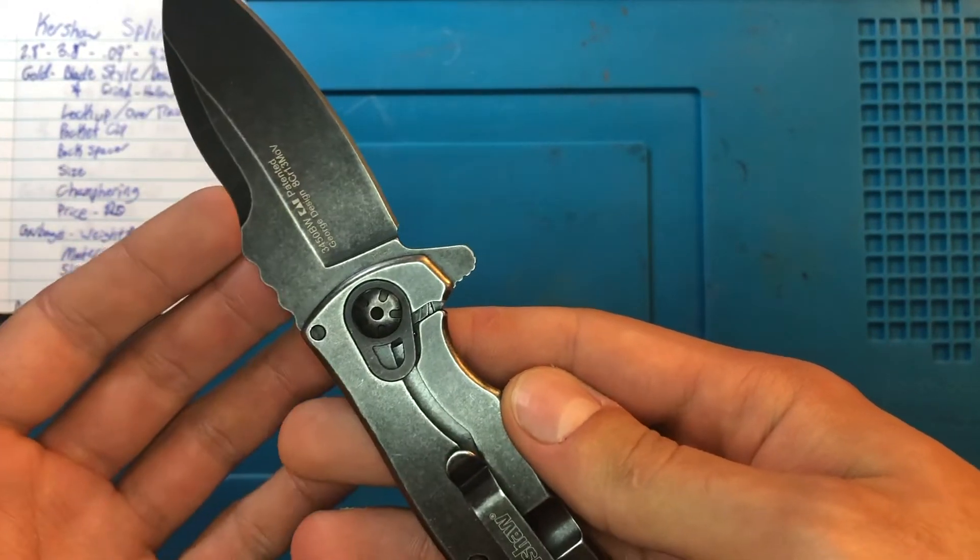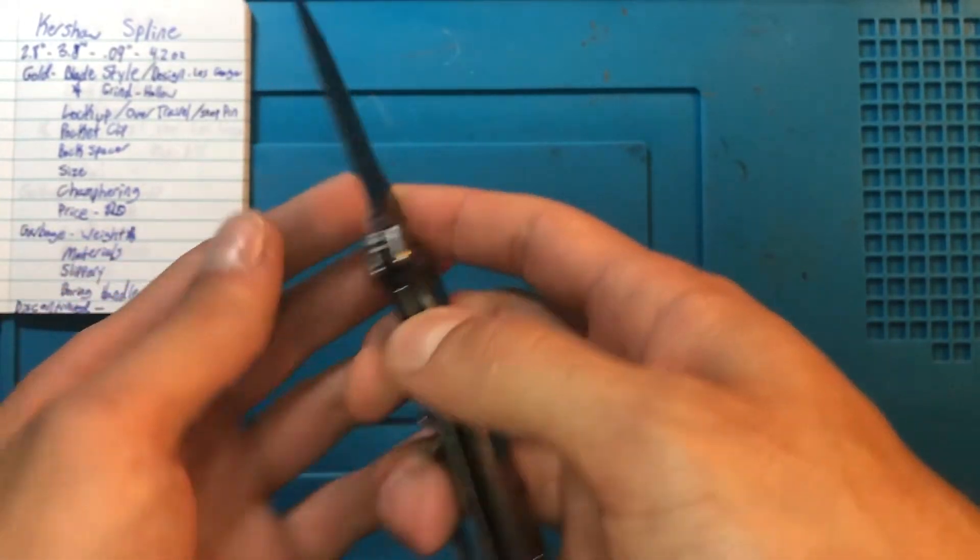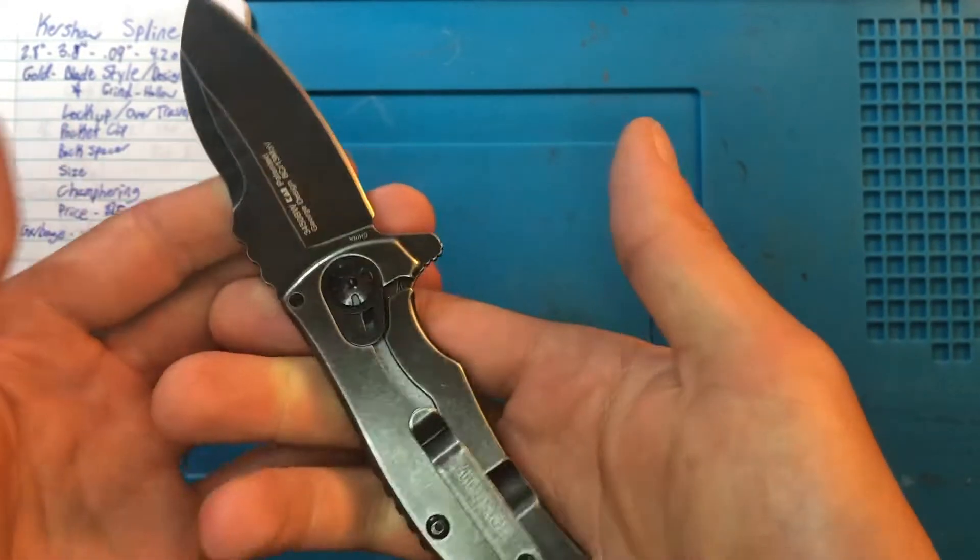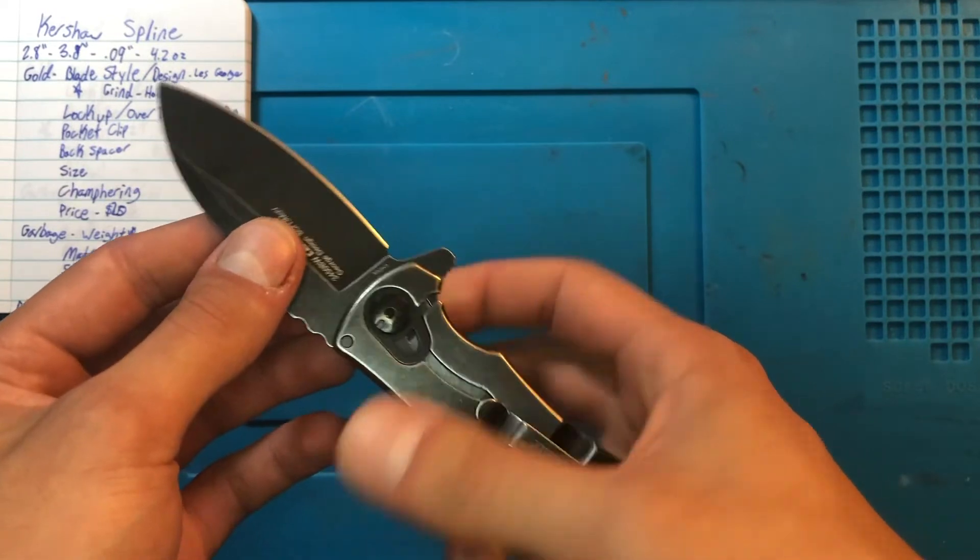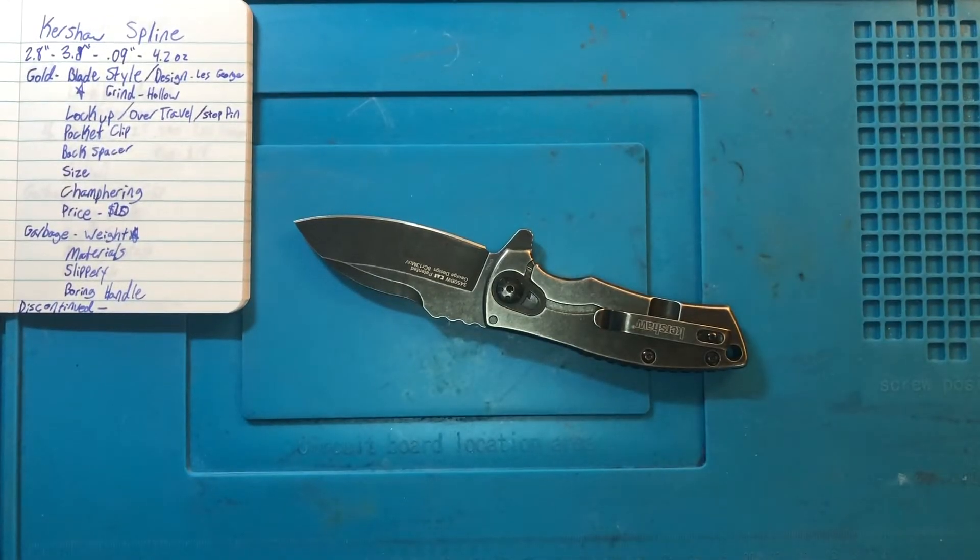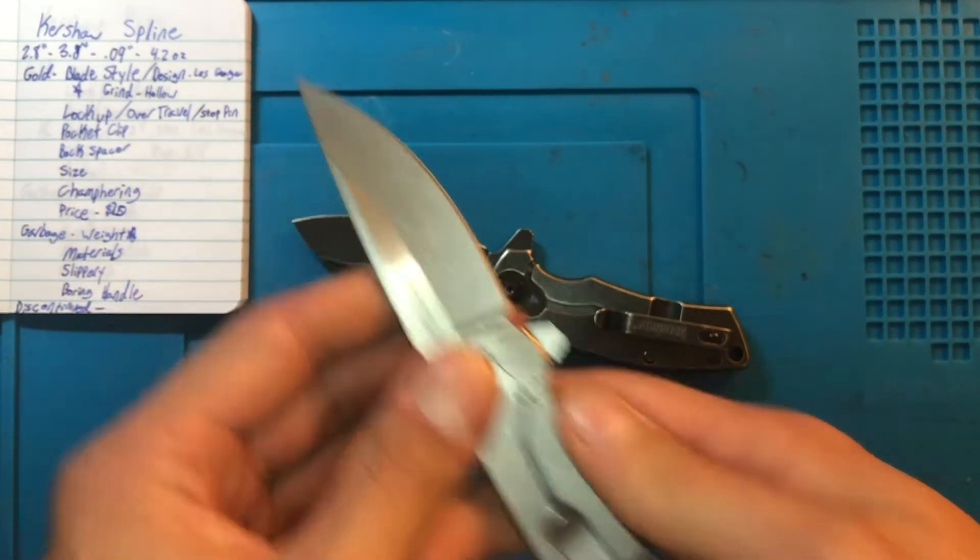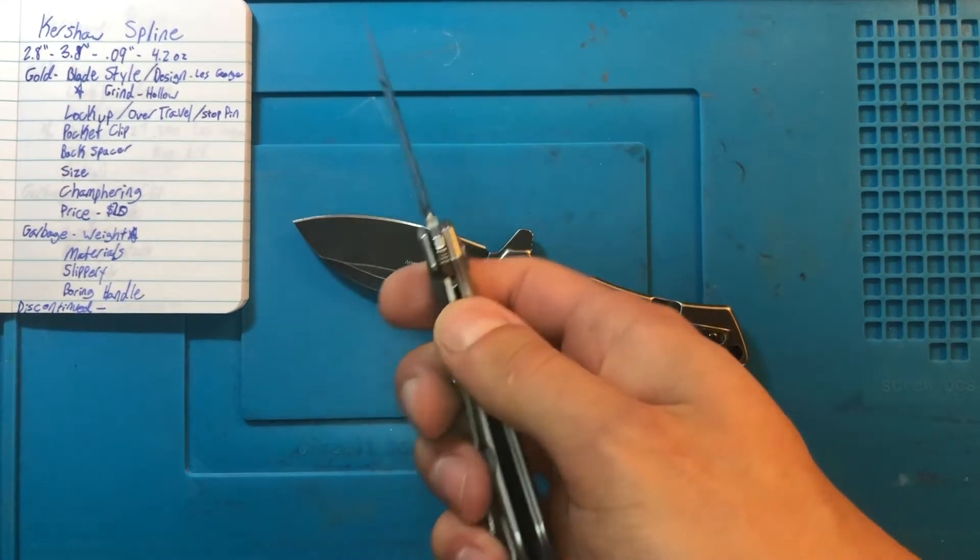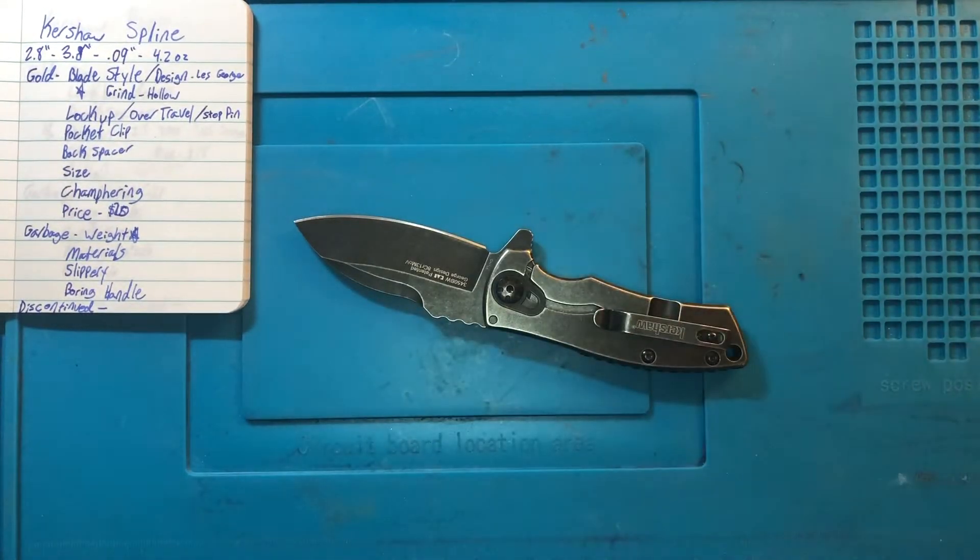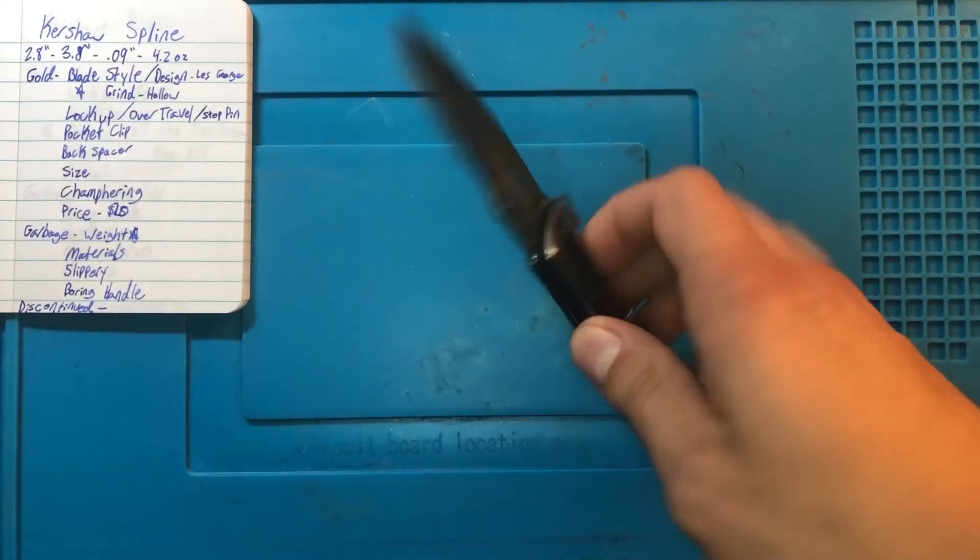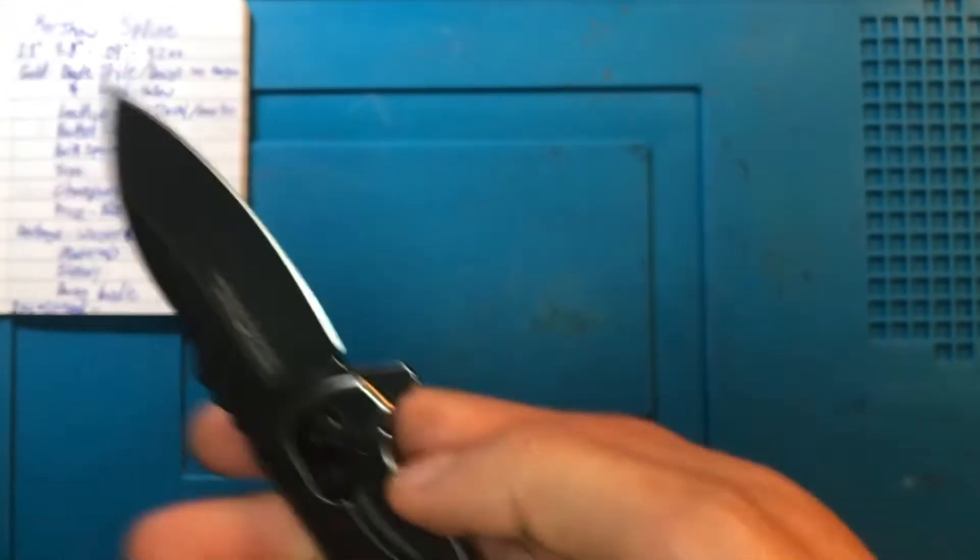That right there you see is that that's a lock over travel stop. What that means is that there is no way for you to push this lock bar. This is an assisted action frame lock. There's no way for you to push it out of line, as opposed to something like a Picot. You're not going to be able to do it because of that little disc right there. Very, very cool.